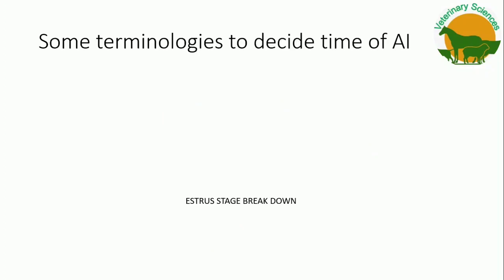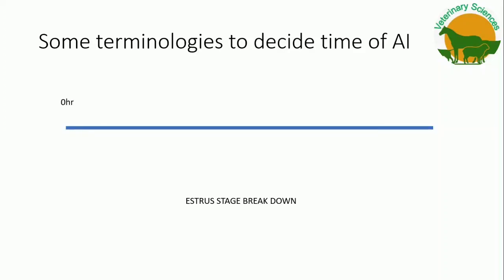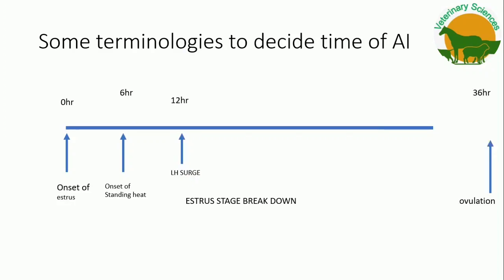To understand the time of AI in animals, we must understand the various terminologies and concepts. The estrus stage is broken into segments: at zero hour is the onset of estrus; after six hours comes the primary sign of estrus, known as standing estrus. After 12 hours of onset of estrus, the LH surge occurs, and after 24 hours of the LH surge, ovulation occurs. The lifespan of the ovum is six hours, while the lifespan of sperm is 24 to 48 hours. Sperm needs six to eight hours for activation or capacitation.